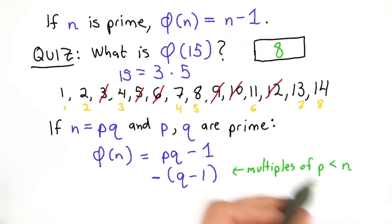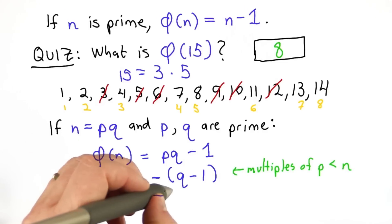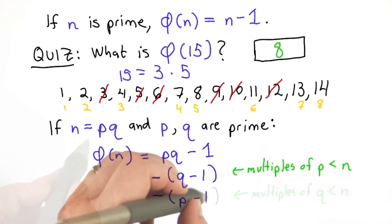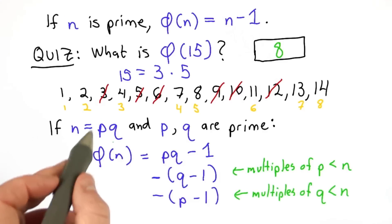That would be all the integers. Then we want to subtract out all the multiples of p that are less than n. Since n is pq, there are q-1 of those. And we want to subtract all the multiples of q less than n, which is again pq. So there are p-1 of those.